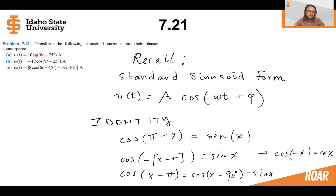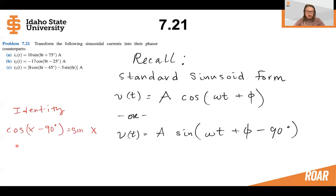This is going to help us because we see that our current is given as a sine wave instead of a cosine wave. So using that identity we can see that a standard form would be amplitude plus sine of omega t plus the phase minus 90 degrees.